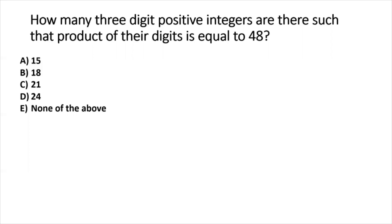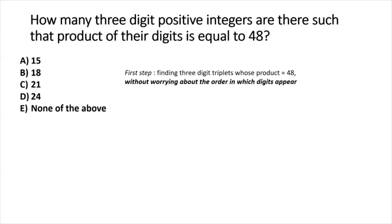The very first step is finding triplets of digits from 1 to 9 whose product equals 48. In this first step, we need not worry about the order in which the digits appear — we'll take care of that in the next step. We start by listing out the factors of 48.